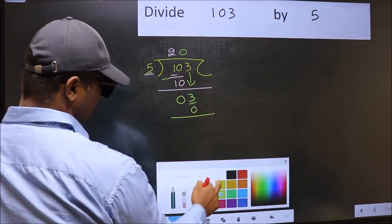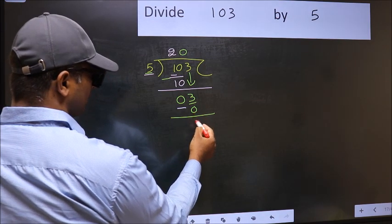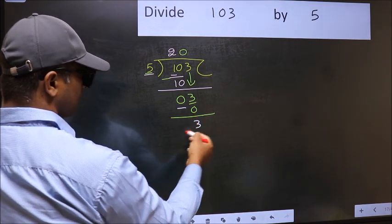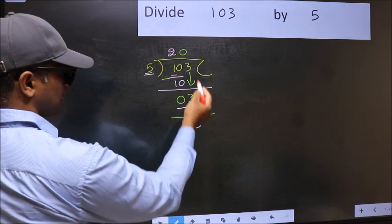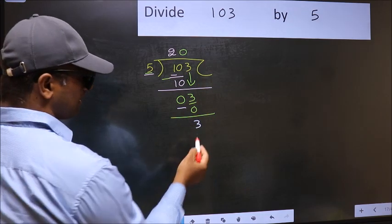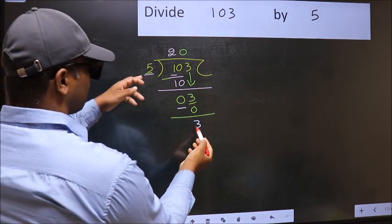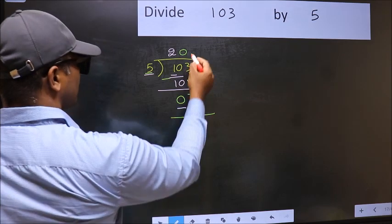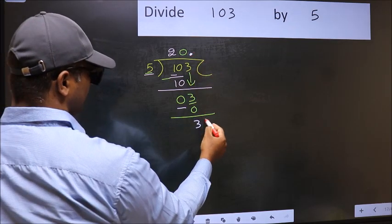Now you should subtract. 3 minus 0, 3. Over here, we did not bring any number down, and 3 is smaller than 5.